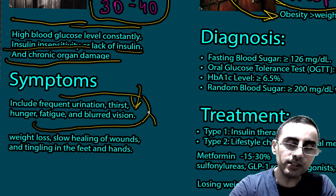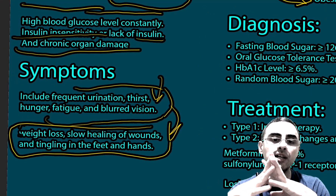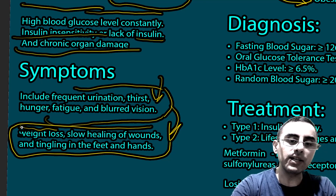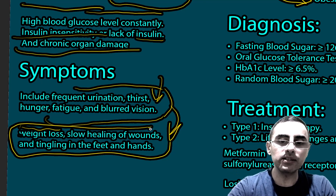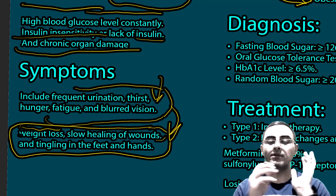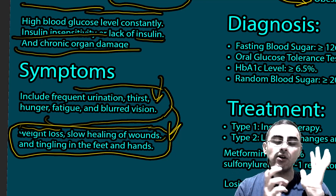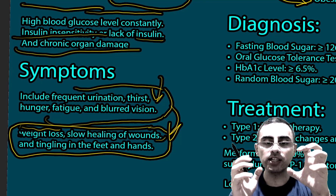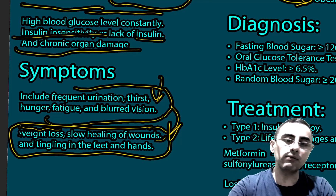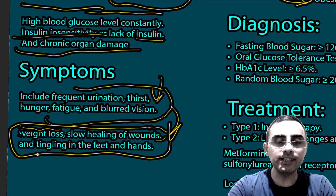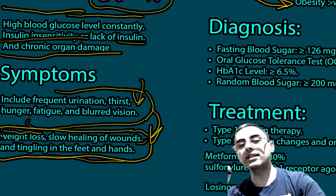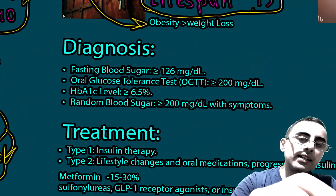If left untreated, weight loss occurs because the body can no longer utilize glucose. Slow wound healing also happens because blood vessels are damaged, resulting in insufficient blood supply, nutrients, and immune cells reaching wounds. Tingling in the feet and hands occurs because nerves are damaged — this is called diabetic neuropathy.